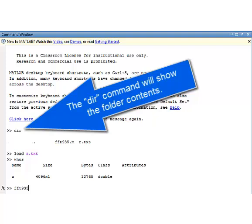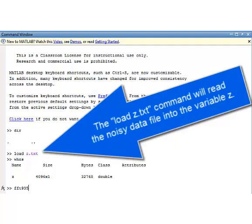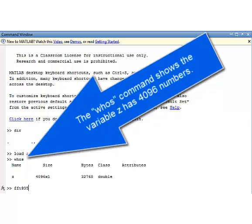The dir command will show the folder contents. The load z.text command will read the noisy data file into the variable z. The whos command shows the variable z has 4096 numbers.